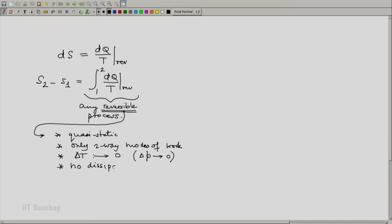No dissipative components. And not only our system but all systems involved must execute reversible processes. If we do this, then we will be able to implement a reversible process and then integrate dq by T over such a process and then we get s2 minus s1.